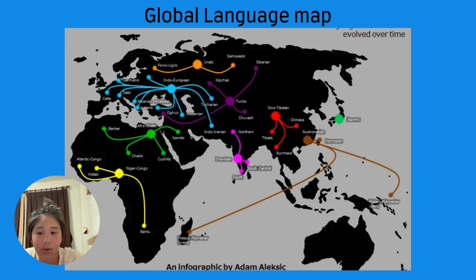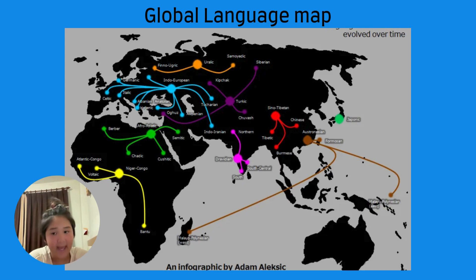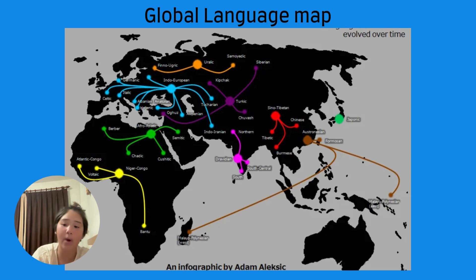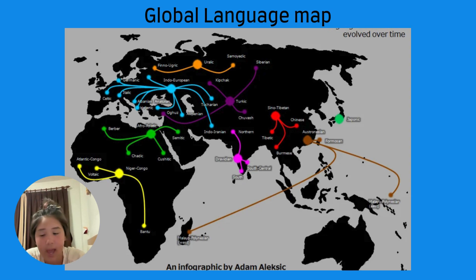Spanish is the offspring of Latin but really came into its own after Spain kicked out the Moors during the Reconquista. Once Spain got rid of its internal rivals, they got bored and decided to take over the New World instead. Spanish sailed across the Atlantic with conquistadors and priests, spreading the language all over Latin America like linguistic wildfire.